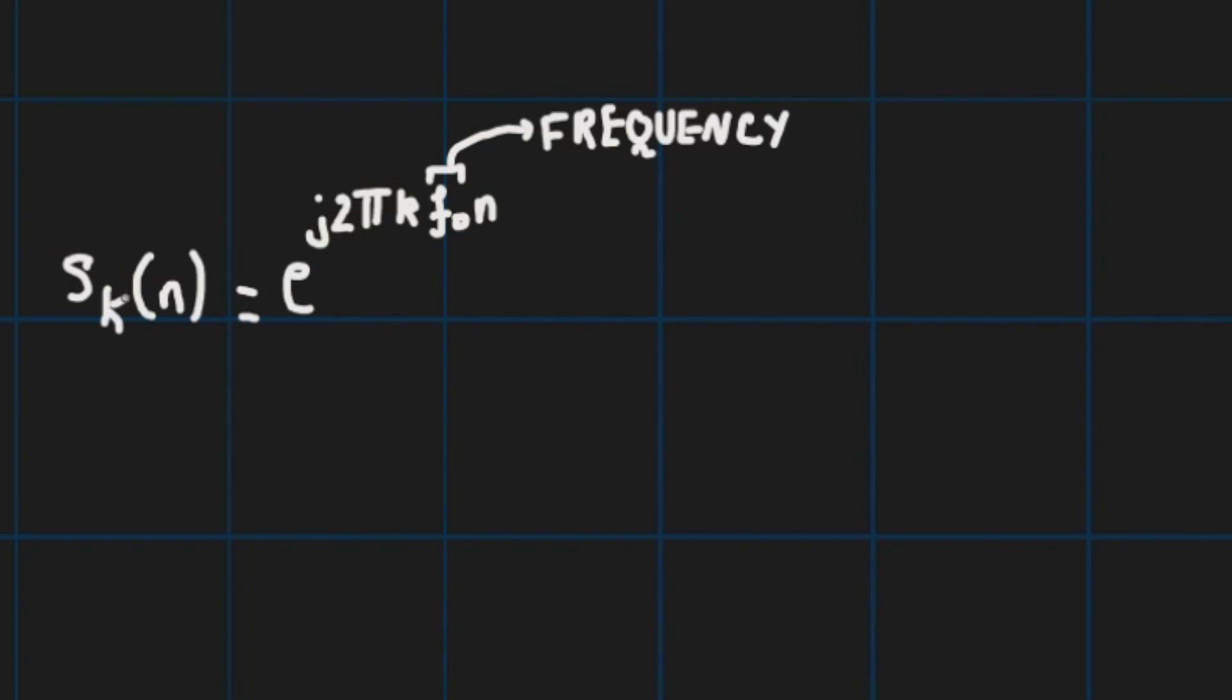Now we said that in previous lectures when we talked about the discrete cosine signal or discrete sinusoids that the sinusoidal signal is periodic if and only if its relative frequency is a rational number and since the complex exponential is written in algebraic form as